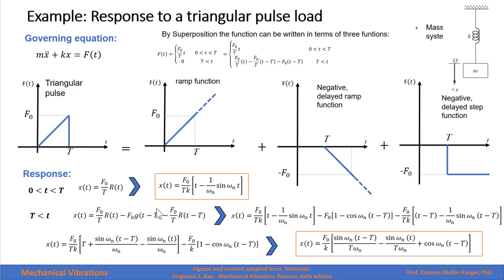For T greater than capital T, we subtract the step function and subtract the ramp, giving this response. Since I know the response of a ramp, I input the response of the ramp, the response of a delayed step, and the response of a delayed ramp. Doing a little algebra, we can manipulate this function and get the final response of the system for time greater than capital T. We did this example previously using the convolution integral — please review the result and confirm we get exactly the same solution.